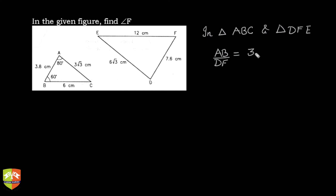And what about DF? DF is 7.6 cm, isn't it? So that means this is how much? This will be 1 upon 2. AB by DF is 1 upon 2.